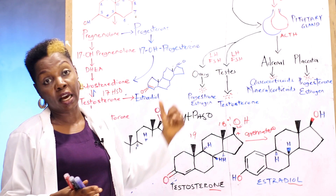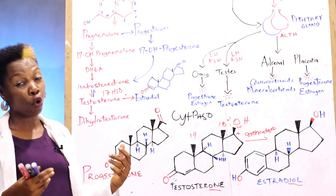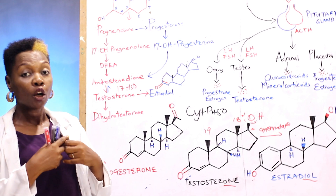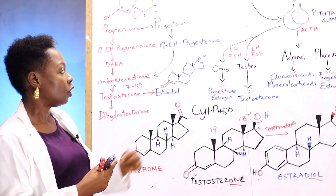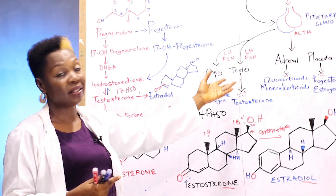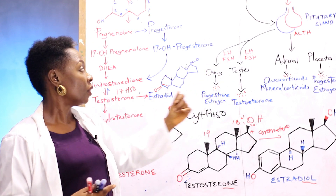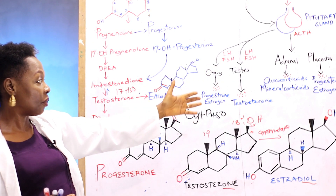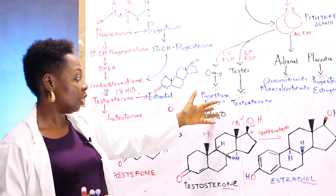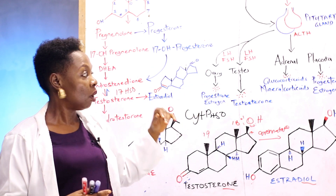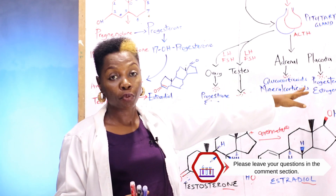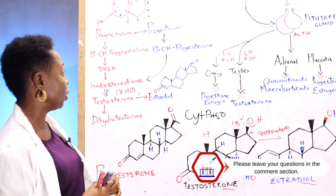These can be called the reproductive hormones because they are synthesized in the gonads. The ovaries and the testis play a major role in reproduction. The hormones that are secreted are progesterone, estrogen, and testosterone, and in the placenta you have progesterone and estrogen.